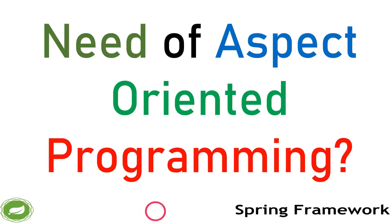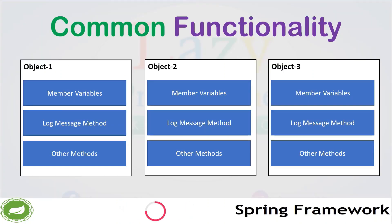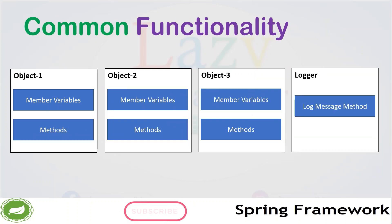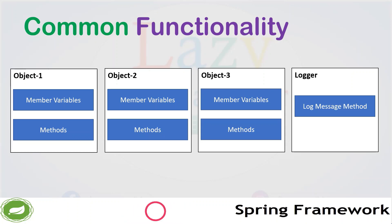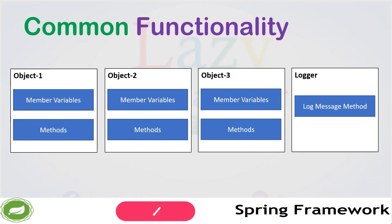Then what was the need for aspect-oriented programming? Suppose we have some common functionality of logging information that we need to implement in all objects. We can write that logging code in all the objects, but that is very poor design. A better approach is to create a separate logger class, put the logging logic into a log message method there, and in objects 1, 2, and 3, create an instance of the logger class and call the log message method. This achieves a little bit of modularity because the logger method has been separated out from the business logic.